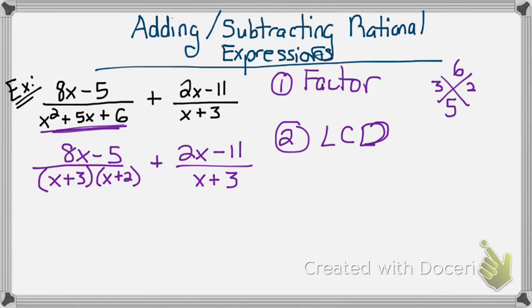If you notice, over here you have an x plus 3 as well as an x plus 3 over here. But in this denominator, you have an x plus 2, but you don't have that over there. So that tells you, you're going to multiply this side times x plus 2.